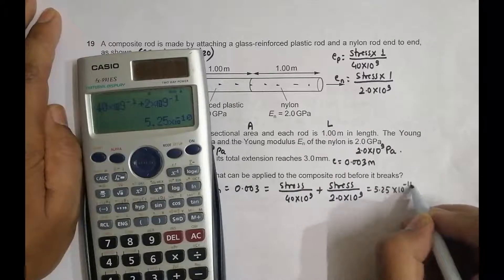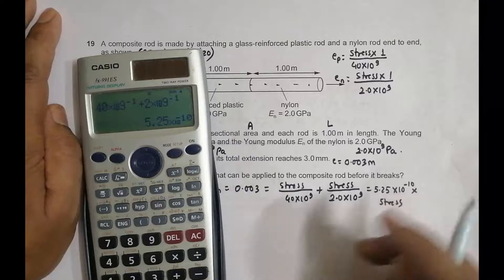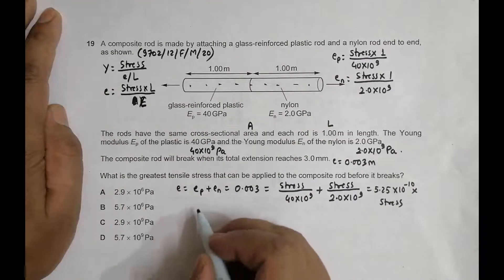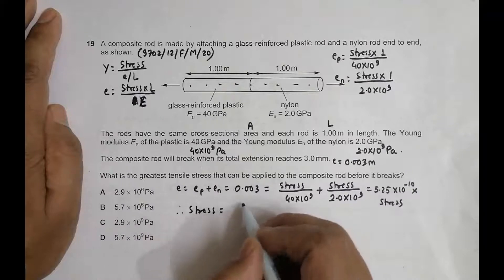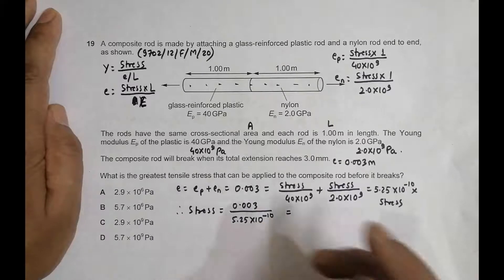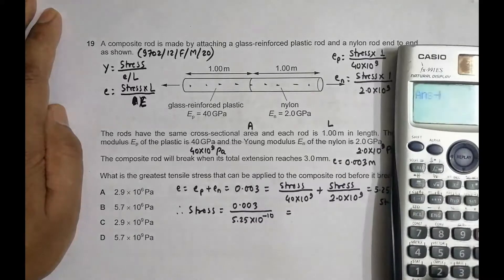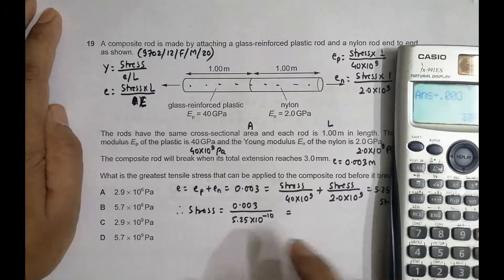The maximum stress equals 0.003 divided by 5.25×10⁻¹⁰. So this will be equal to 0.003/(5.25×10⁻¹⁰).